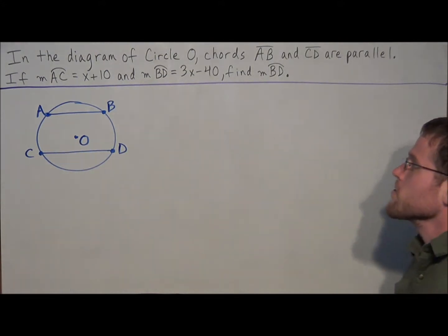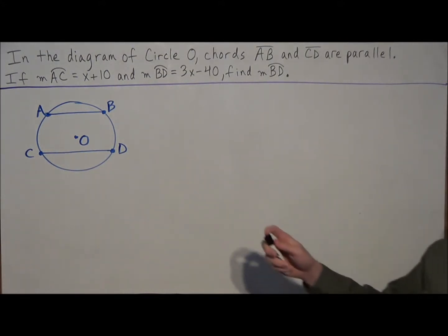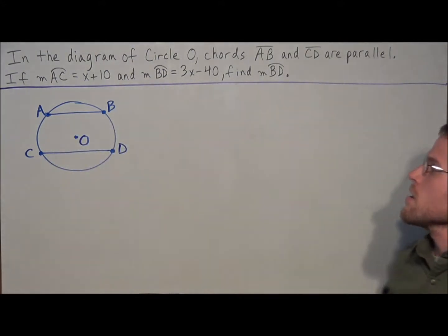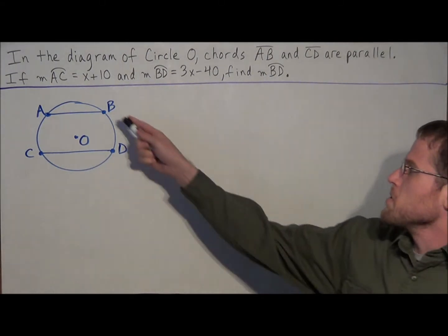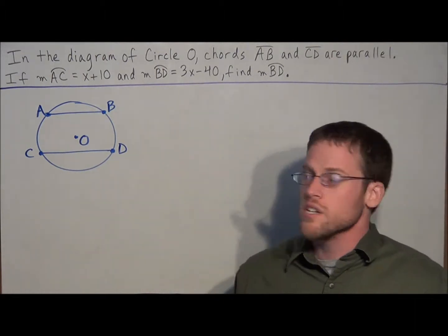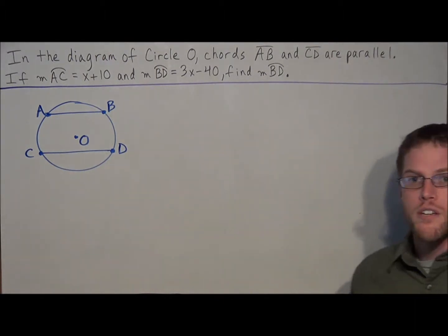So we have in the diagram of circle O, chords AB and CD are parallel. If the measure of arc AC equals x plus 10, and the measure of arc BD equals 3x minus 40, find the measure of arc BD.